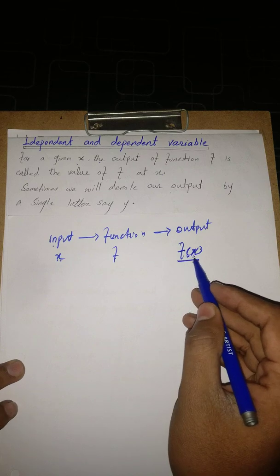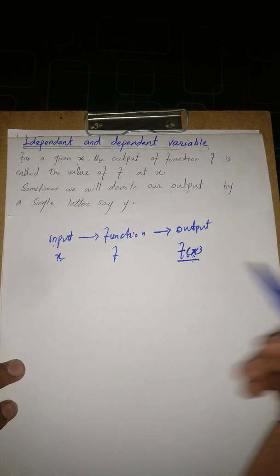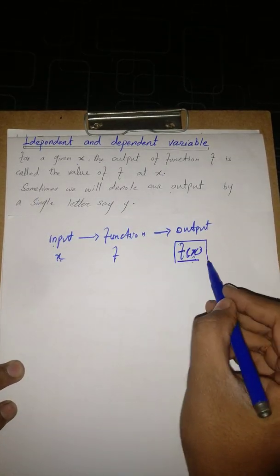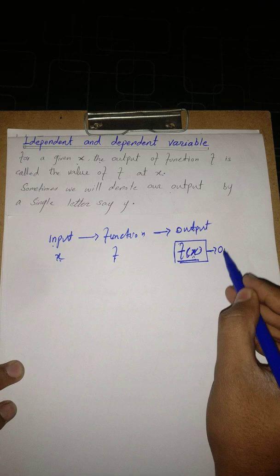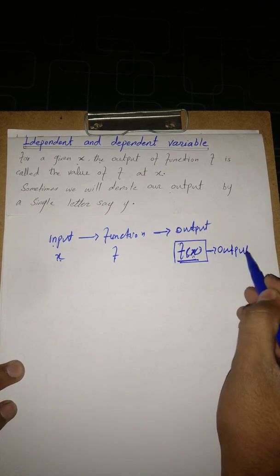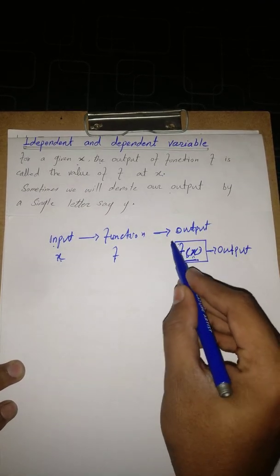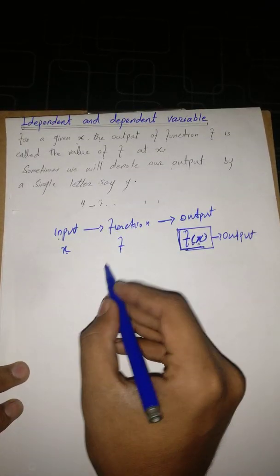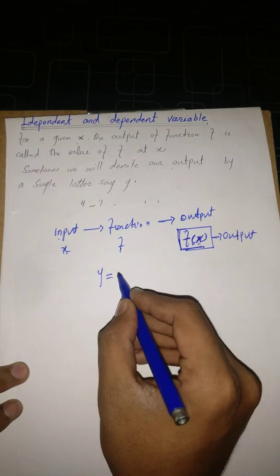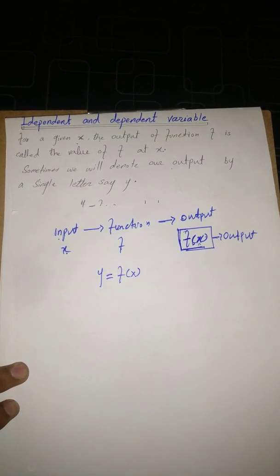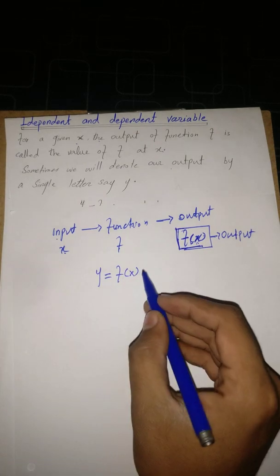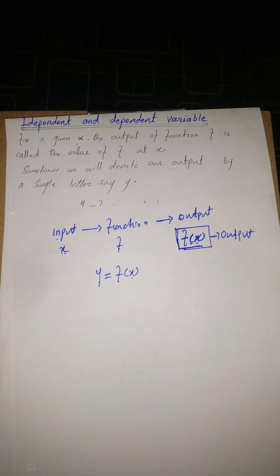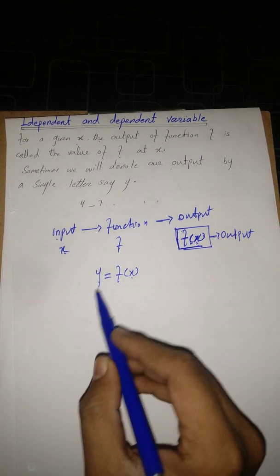Sometimes when we study dependent or independent variables, we take this output equal to some other variable, say Y. So sometimes we denote our output F of X equal to Y, and we write Y is equal to F of X. In this equation there are two variables: X and Y.